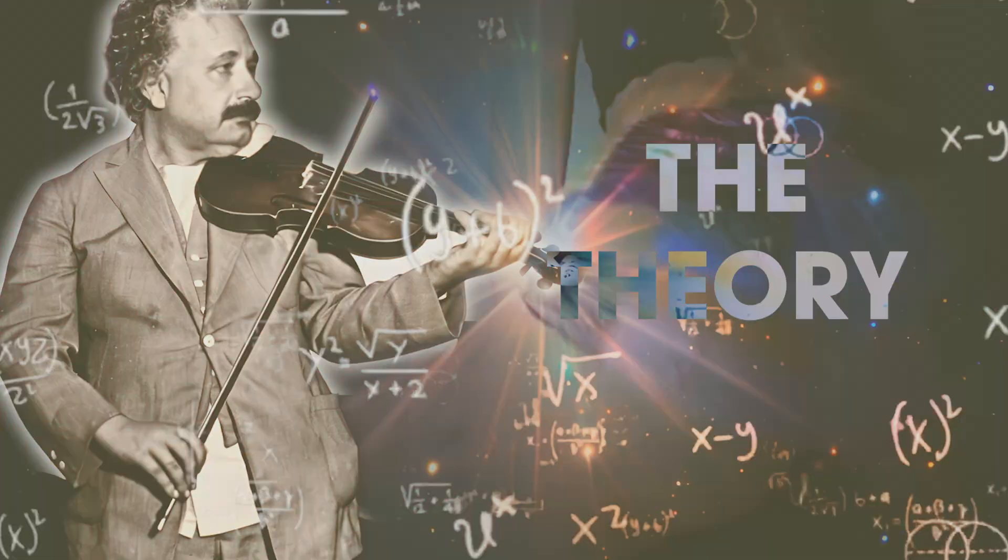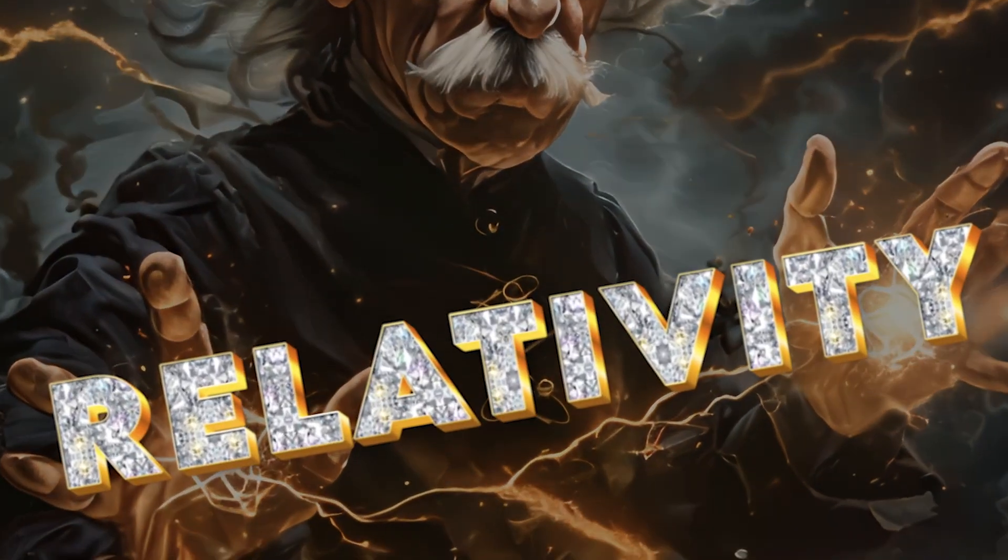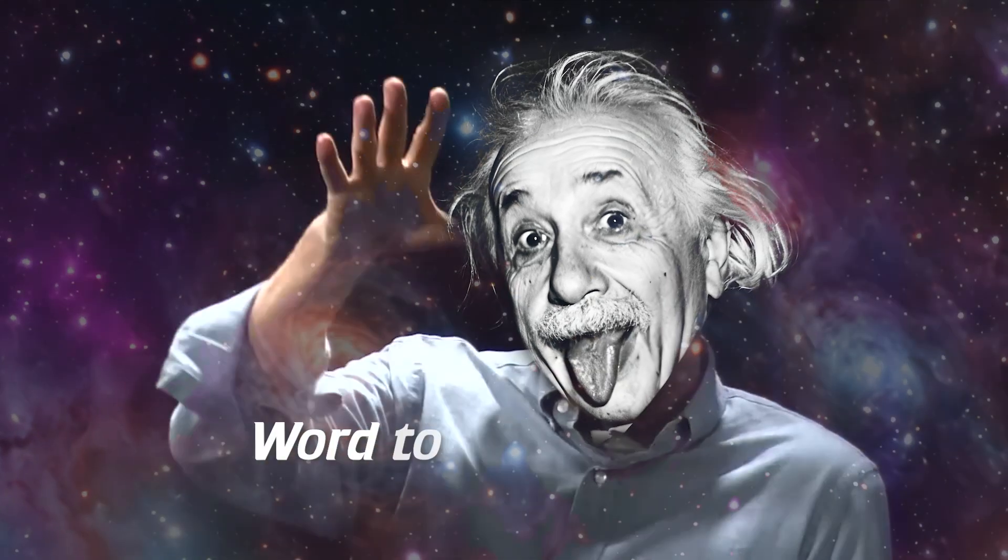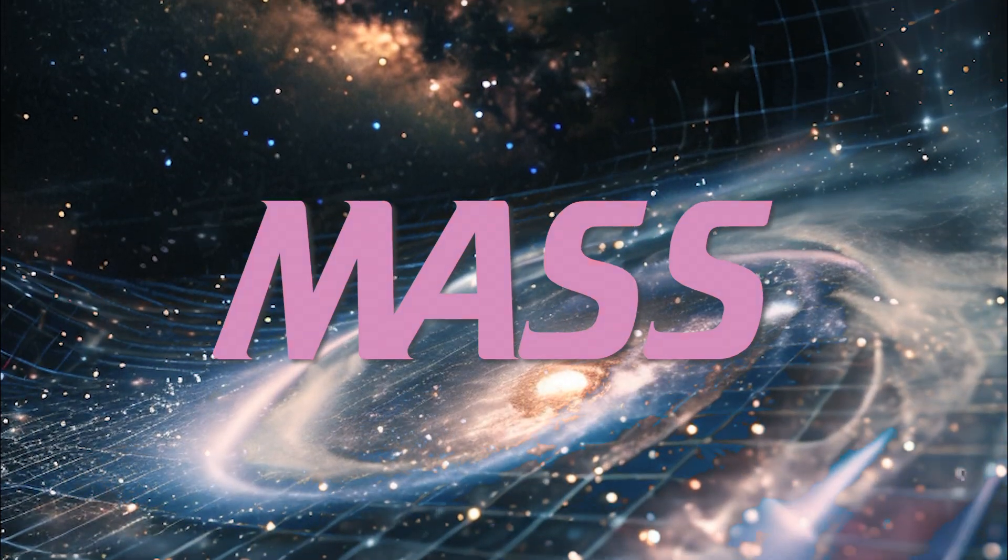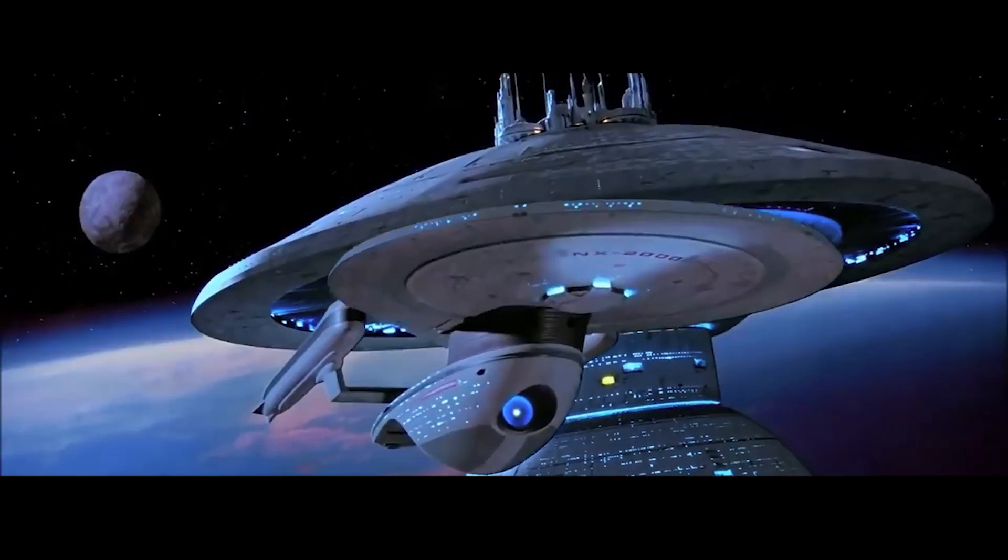Einstein explained gravity with the theory of relativity. So it boils down to mass. The faster you move through space, the more massive you become until eventually there isn't enough gas in the whole universe to fill the tank. Objects with even the tiniest amount of mass just can't travel at the speed of light, which sucks!